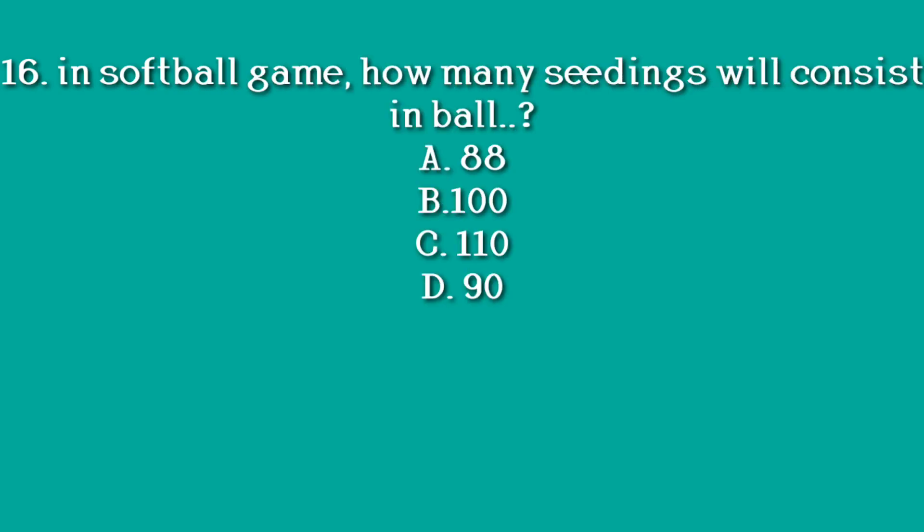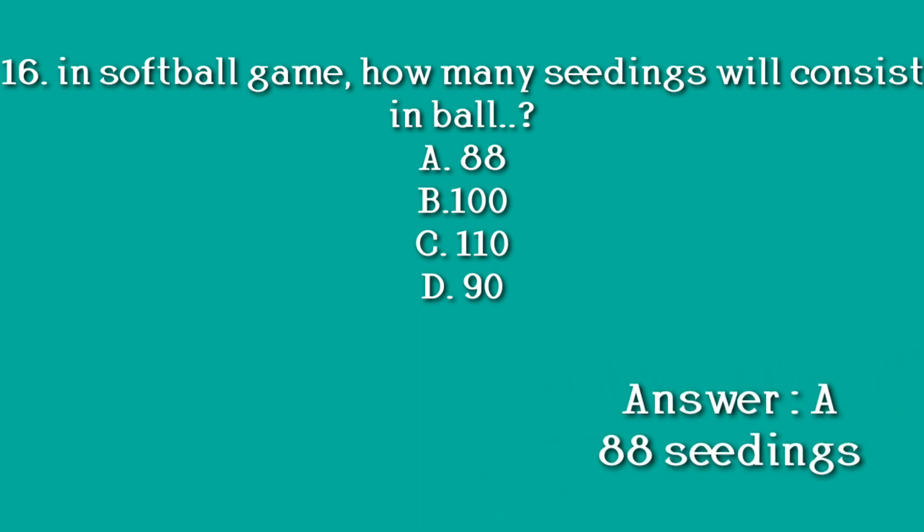In softball, how many seedings will the ball consist of? Option A. 88. Option B. 100. Option C. 110. Option D. 90. Answer: A. 88 seedings.